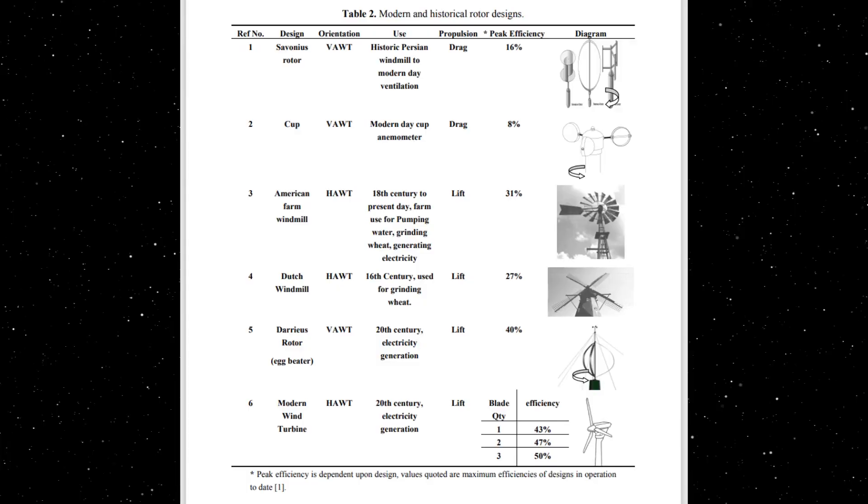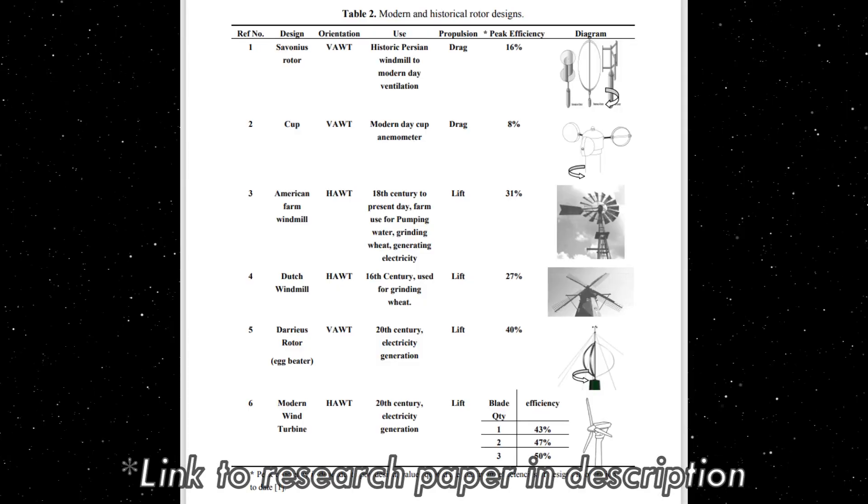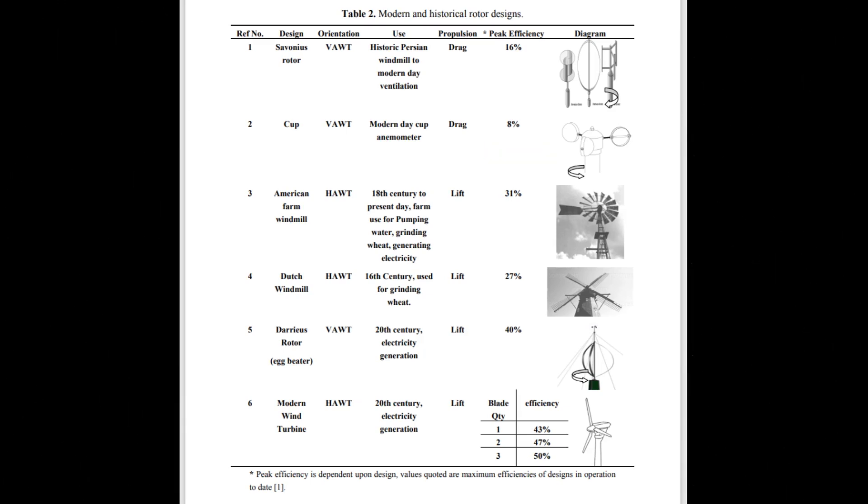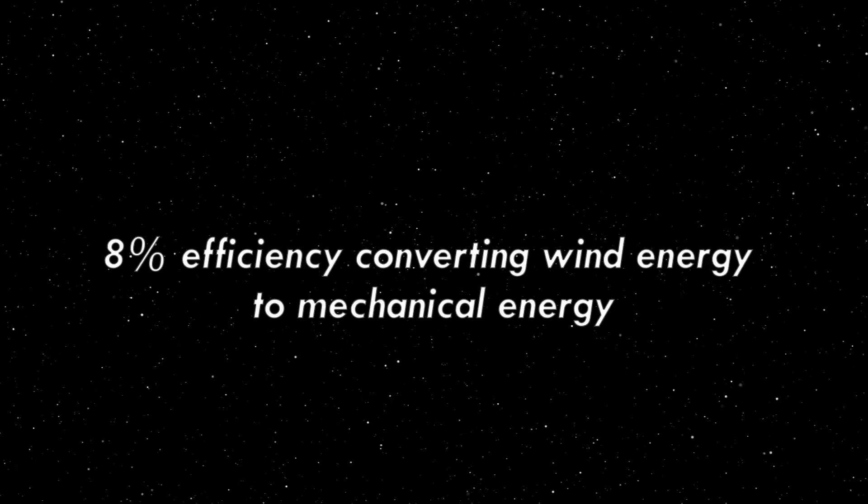One last thing I like to point out about vertical axis windmills and particularly this one is the propulsion efficiency, closely resembling a cup type anemometer, which has a peak efficiency of 8% to convert wind energy into mechanical energy.